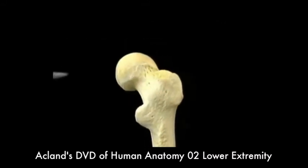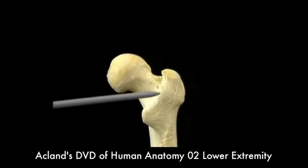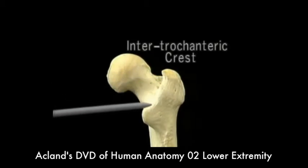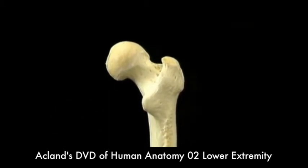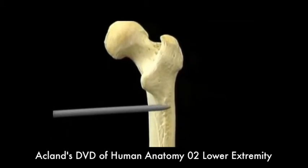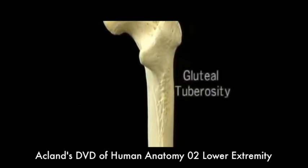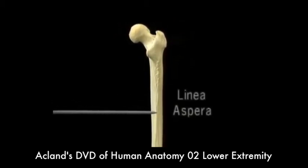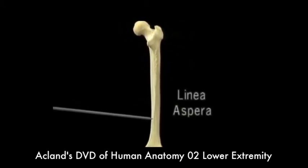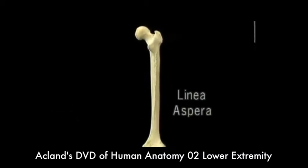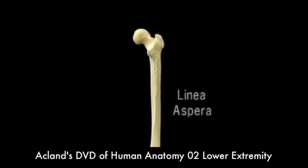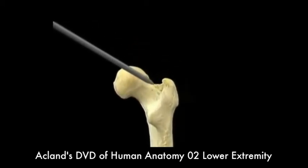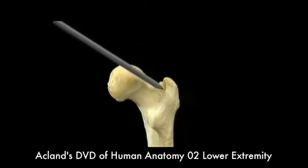On the back of the femur, this prominent ridge, the intertrochanteric crest, runs from the greater to the lesser trochanter. This broad rough area is the gluteal tuberosity. This rough line running down the shaft of the femur is the linea aspera. Many muscles have their origins or their insertions on the linea aspera, on the gluteal tuberosity, and in this hollow in front of the intertrochanteric crest.